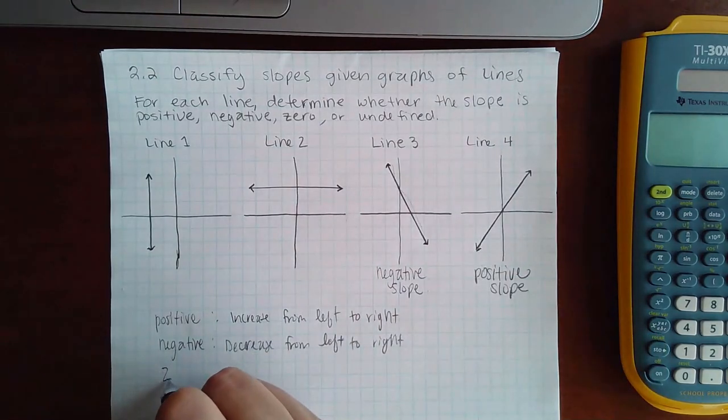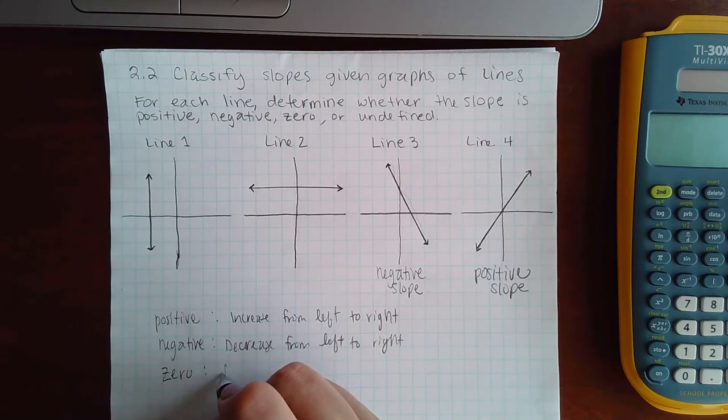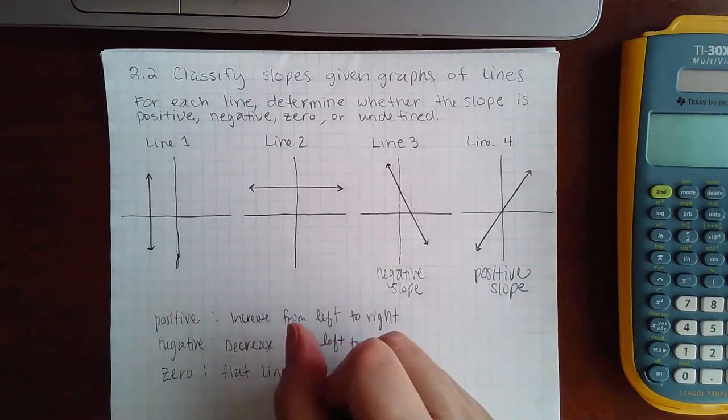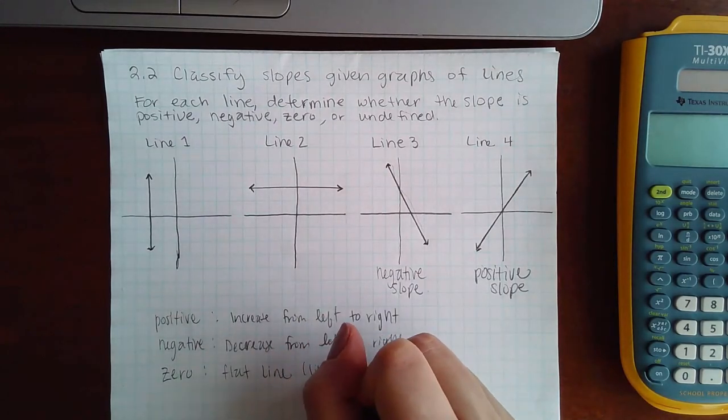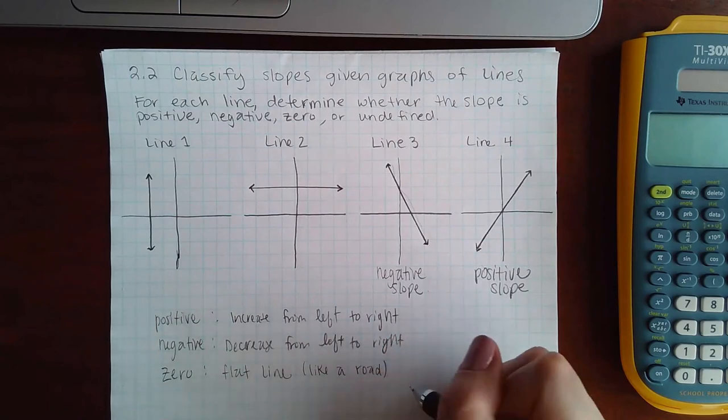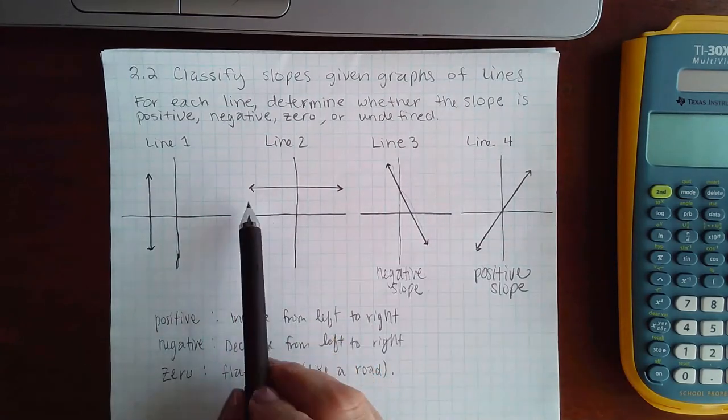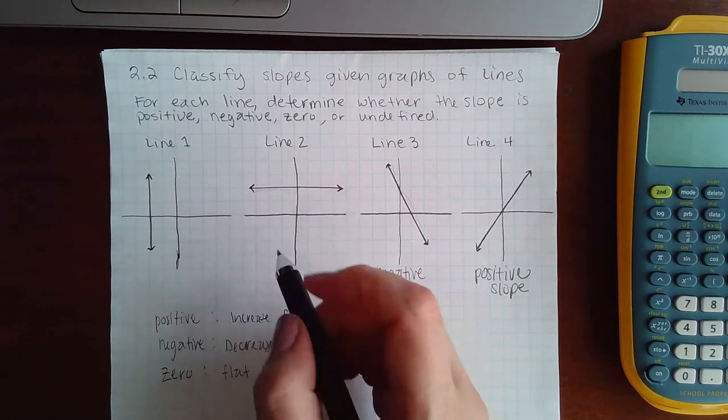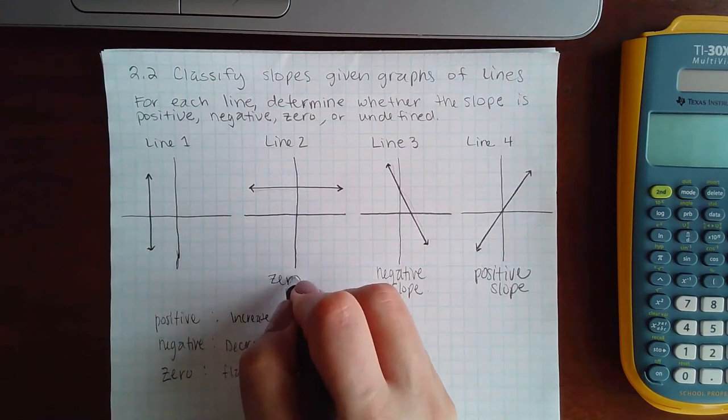Now if it has a zero slope, that means it is a flat line. What that means is like a road - it's flat like the road. So when you're driving on the road, you're driving in this direction. This one would be a zero slope.